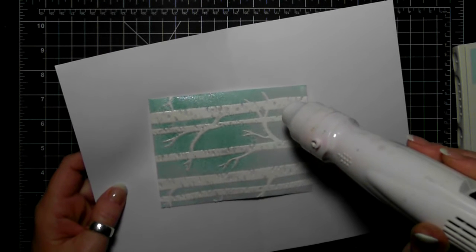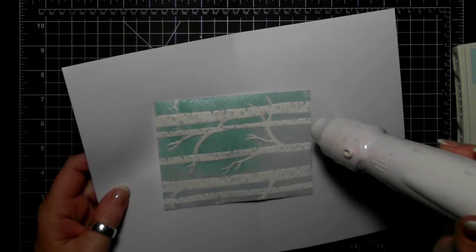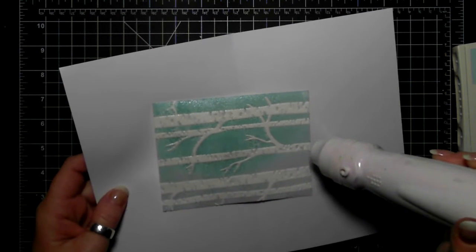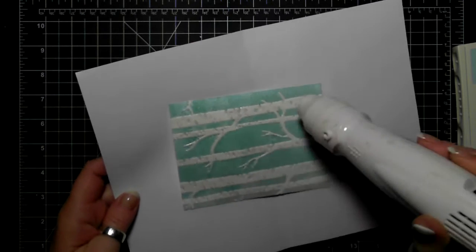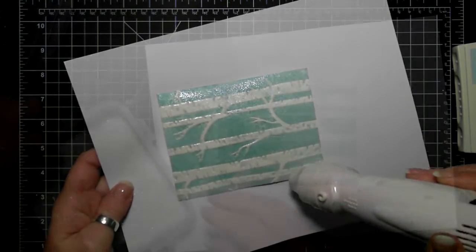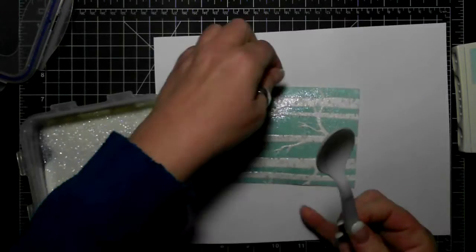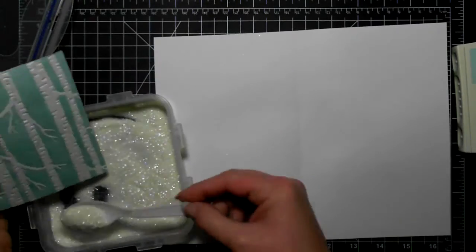All you have to do is heat it with your heat tool. You don't want to heat it too much and dry it, you just want to heat it till it melts, and then it becomes like a super sticky glue which will adhere glitter exceptionally well.